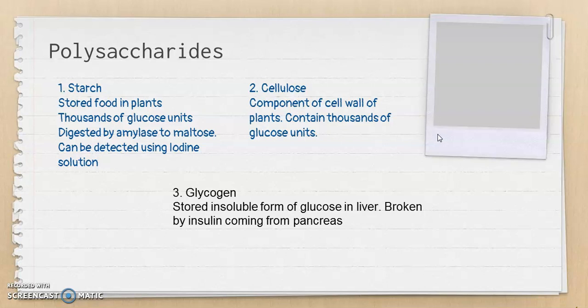The third polysaccharide is glycogen — a stored, insoluble form of glucose in the liver. Starch is the stored form in plants, but when humans or other animals consume excess carbohydrate, excess glucose is stored as glycogen. When we are starving and blood glucose falls below normal, glycogen is broken down by insulin — a hormone released by the pancreas — which converts glycogen in the liver back into glucose to restore normal blood glucose concentration.